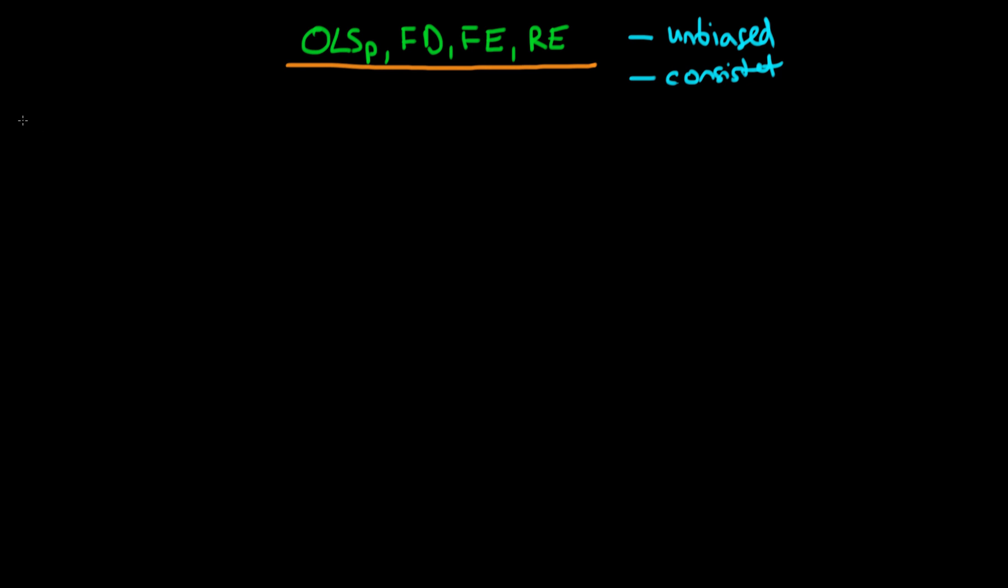Okay, so the first assumption which we are going to talk about is just the statement that we have a model which looks something like this. So we have some dependent variable Y_it and that's equal to beta_0 plus beta_1 times X_it1, where the 1 here indicates just that we're talking about one particular type of explanatory variable.